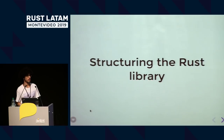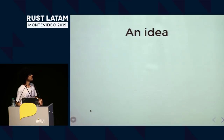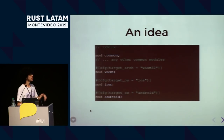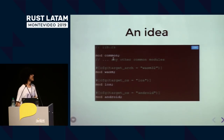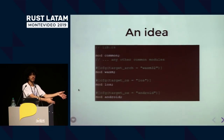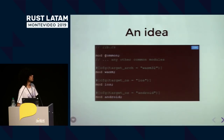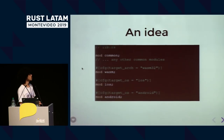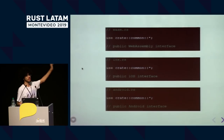How to structure the Rust library? At my company, we started with this idea: in the library file, you put your common modules — core Rust library code. Then you create other modules that use the common module and create a public interface for a specific platform. So on each platform-specific module, it imports the common code and creates functions that WebAssembly, Android, or iOS can understand.